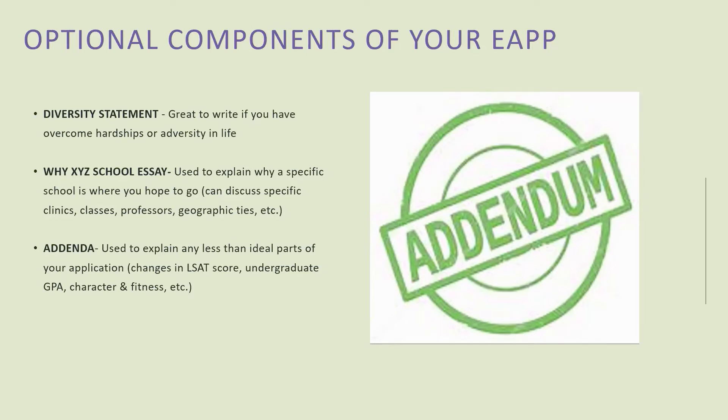Students may also write an addendum because they're required to make certain character and fitness disclosures. The key things to know about writing character and fitness disclosures are: first, state the facts; second, be honest and forthcoming; and third, explain any lessons learned or growth that has transpired since the incident took place.